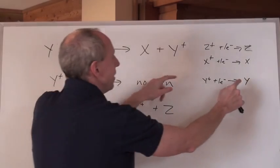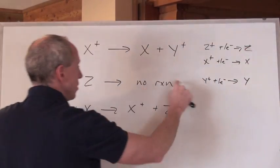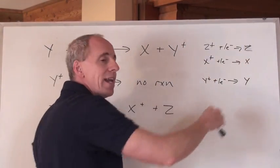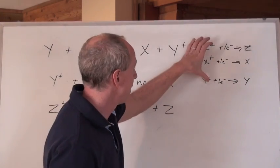Look, Y positive with Z, non-spontaneous, just like that says. Z positive with X, that's spontaneous. And now you've made a little bit of a redox chart in and of itself.